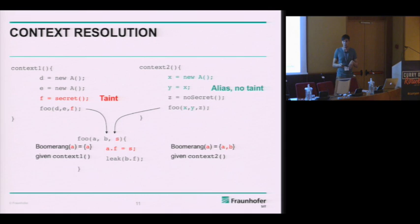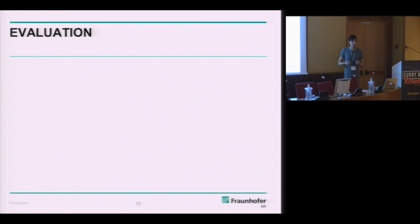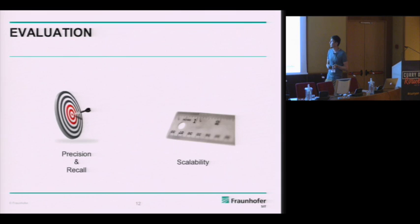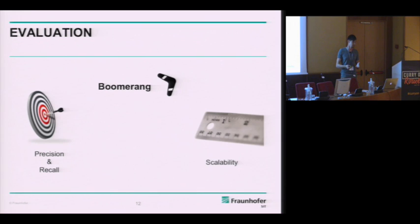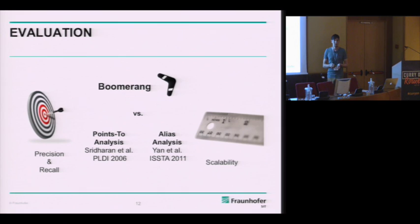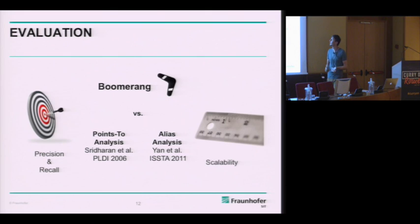Those are mainly the features of Boomerang. We implemented Boomerang within Soot, the static analysis framework for Java, and wanted to evaluate precision, recall, and scalability. We compared it to two existing analyses: a points-to analysis by Sridren et al. from PLDI 2006, and an alias analysis by Dacong Yan et al. published at ISSTA 2011. Both analyses are flow-insensitive but context-sensitive, and they are also demand-driven, making them as comparable as possible.